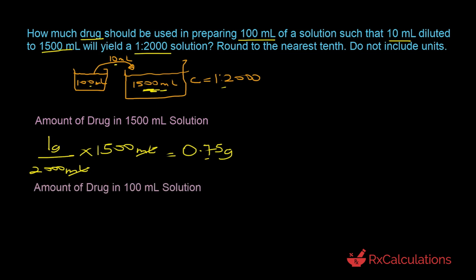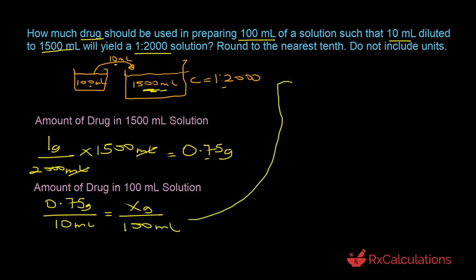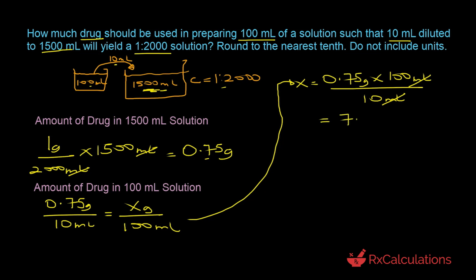The next step is to determine the amount of drug in the 100 milliliter solution. We set up a proportion: 0.75 grams is present in 10 milliliters; how much will be present in 100 milliliters? So x equals 0.75 grams times 100 milliliters divided by 10 milliliters. The milliliters cancel out and you get 7.5 grams. The question says round to the nearest tenth and do not include units, so the answer is 7.5.